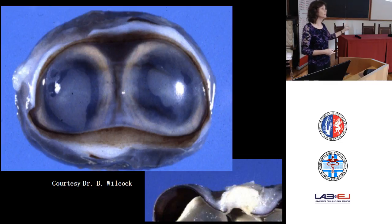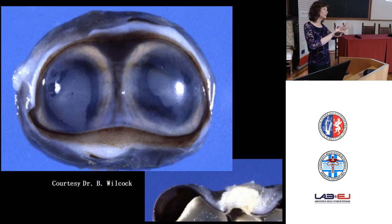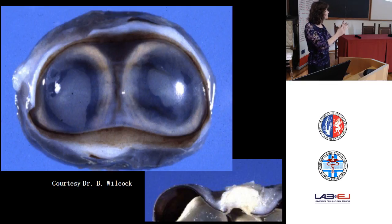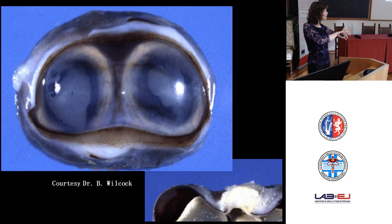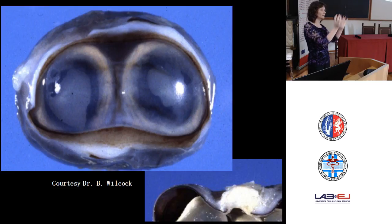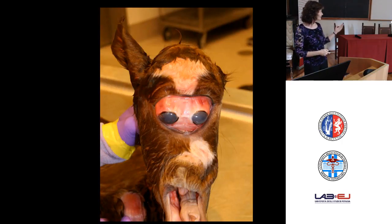In this particular case, two optic vesicles were trying to form — we can see they have a partial division — but they were lodged within the same orbit. Synophthalmia is the term to use here. There was an attempt at separating into two optic vesicles, but they remained so close that they ended up sharing the same orbit.